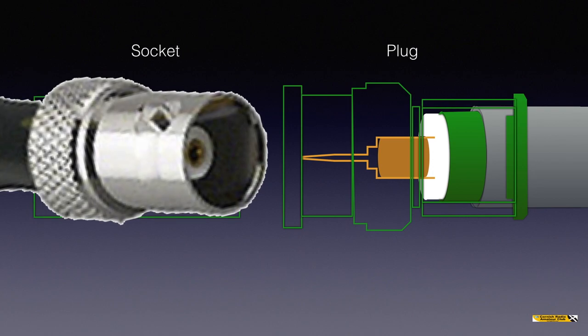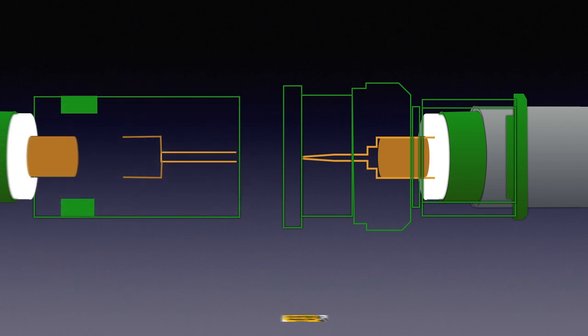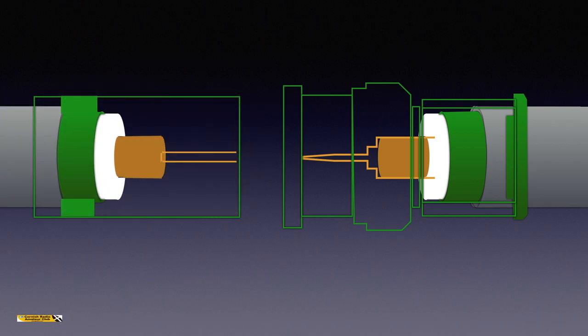If we want to look at a socket, or a female connector, it would look something like this. Diagrammatically, it looks like that — with the coax connecting this time not to a pin, but to a small receptacle. Once again, the braid is securely connected to the metal outside of the connector, and there's a securing or locking nut which tightens up over the protective covering.